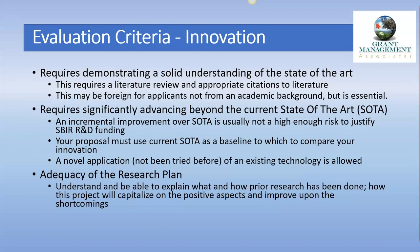What does innovation mean in the evaluation criteria? Innovation is one of the main criteria. You have to demonstrate a solid understanding of the state of the art — involving a literature review and citations. This may be unfamiliar to applicants who don't come from an academic background. It's essential that you understand who's been doing what in the field, what's current, and then take it significantly forward beyond that state of the art. An incremental improvement is usually not high enough risk to justify SBIR funding, but you must use the state of the art as a baseline. A novel application of an existing technology is also allowed, but it really needs to be genuinely novel.